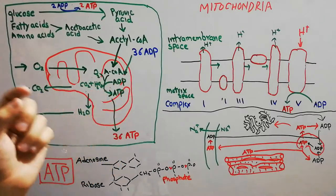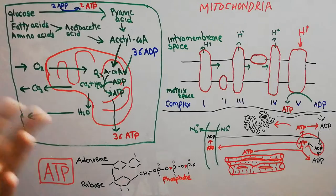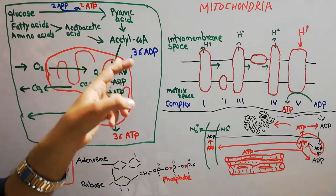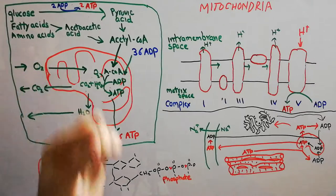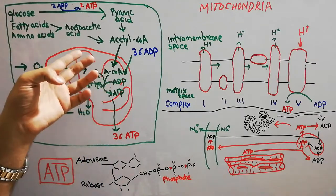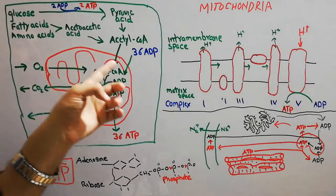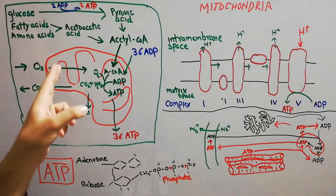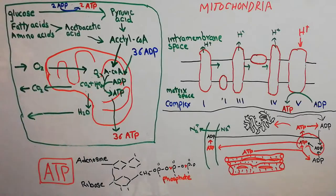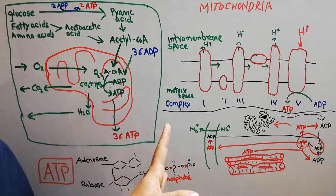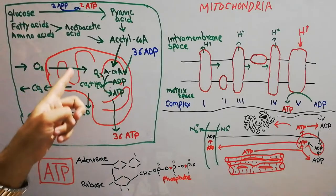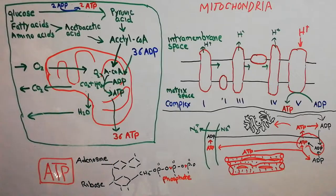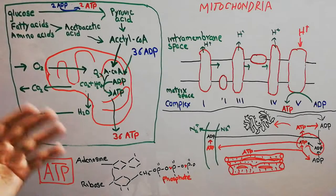The membrane is formed of a lipid bilayer — two layers of lipid. Similarly, the membrane of mitochondria is also formed of a lipid bilayer. There are two membranes: one surrounding the outside portion of the mitochondria and another present inside. The key difference is that the inside membrane of the mitochondria is divided into folds or portions, which increases the surface area of mitochondria hundreds of thousands of times.